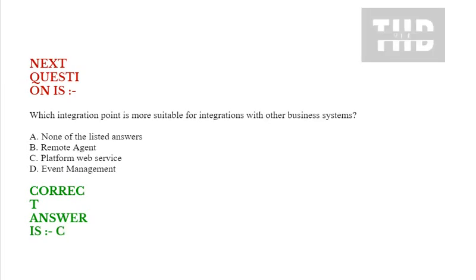Next question: Which integration point is more suitable for integrations with other business systems? Option A: none of the listed answers. Option B: remote agent. Option C: platform wave service. Option D: event management. Correct answer is Option C.